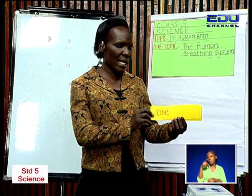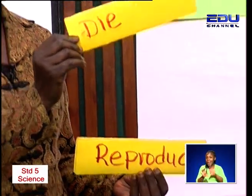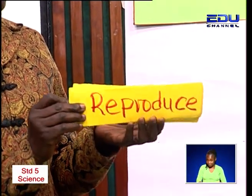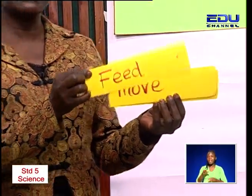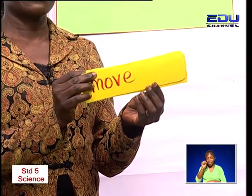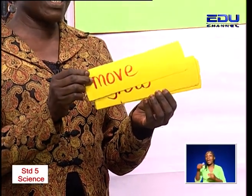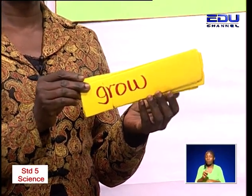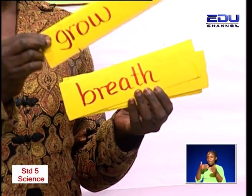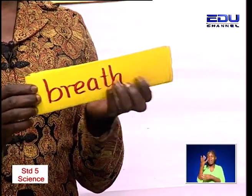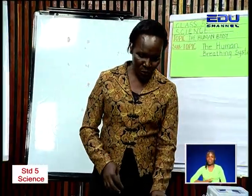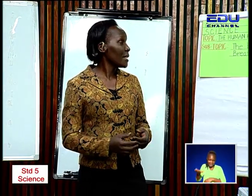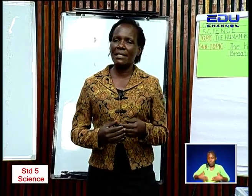Just to remind ourselves, these are some of the things we said about animals: animals die, animals reproduce, animals feed, animals move. We also said animals grow, and then we said animals breathe. That's where we are coming to now — we want to see how the human breathing system behaves.